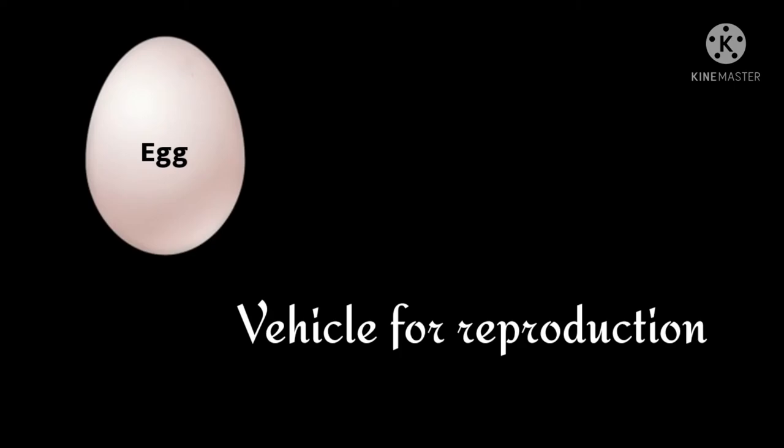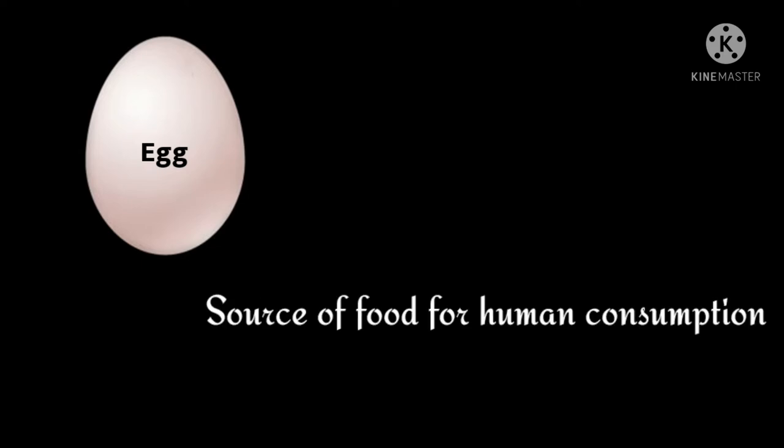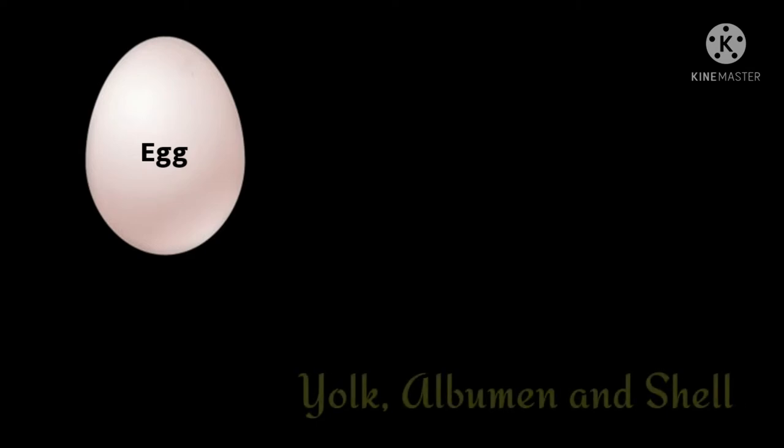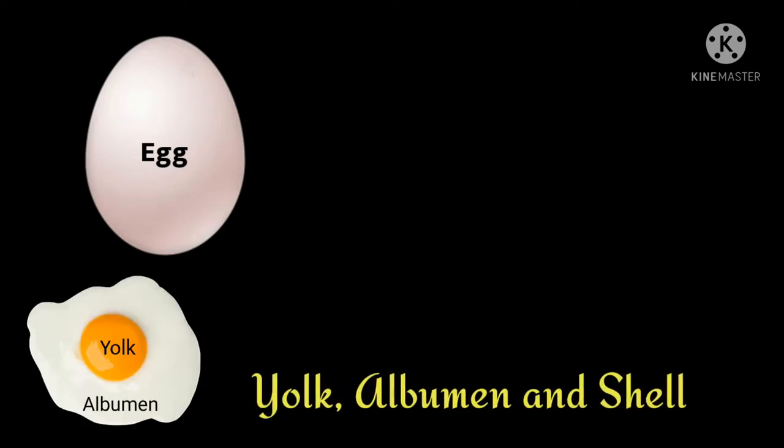The egg is a vehicle for reproduction. It is also served as a source of food for human consumption. All eggs have three main parts: yolk, albumen, and shell.